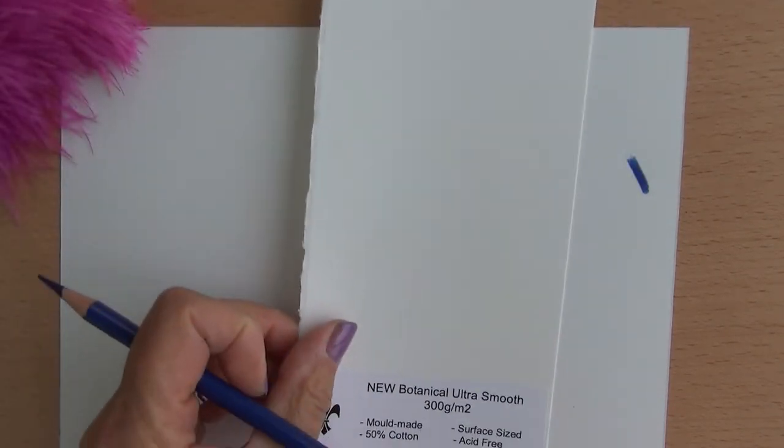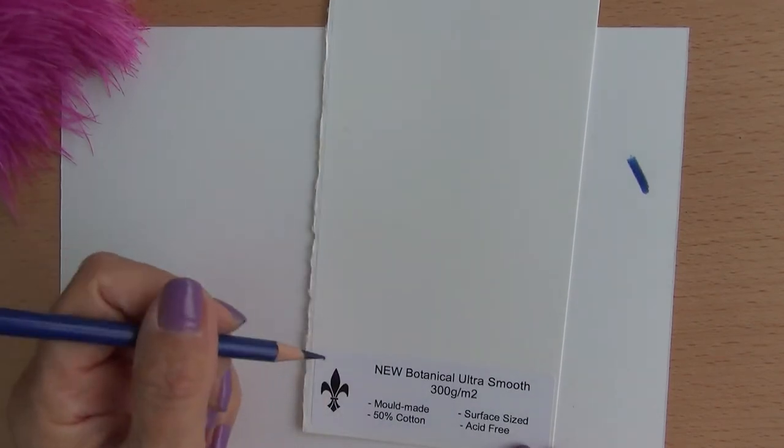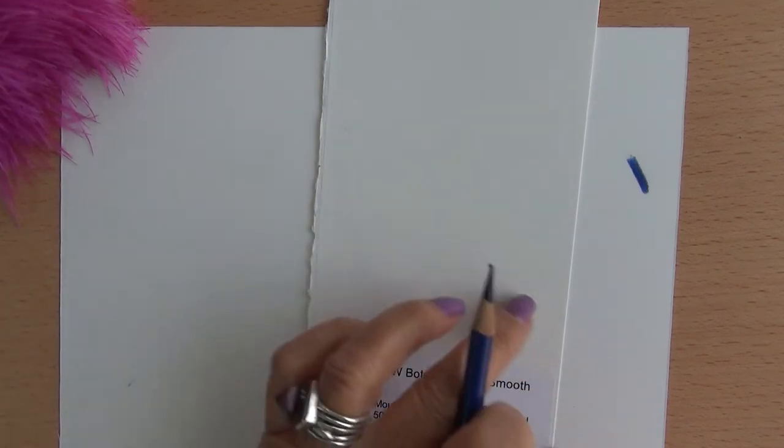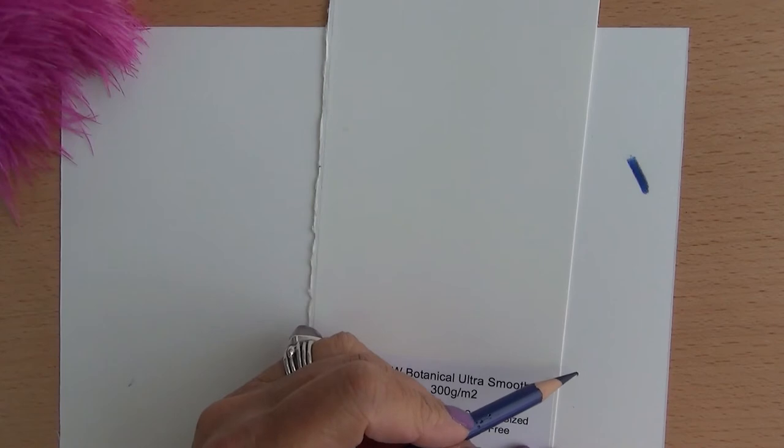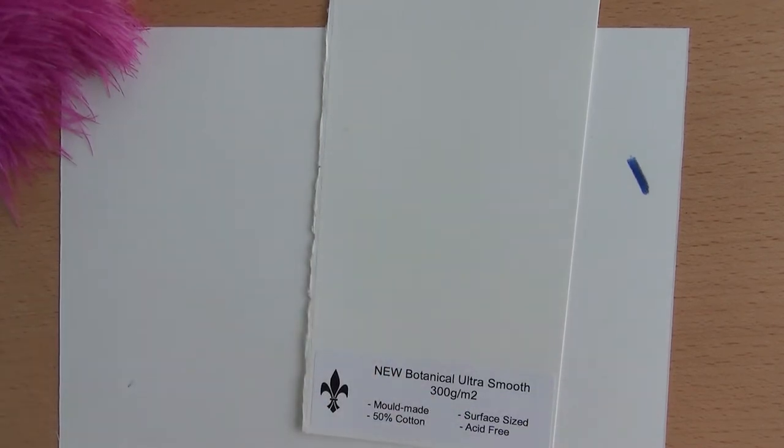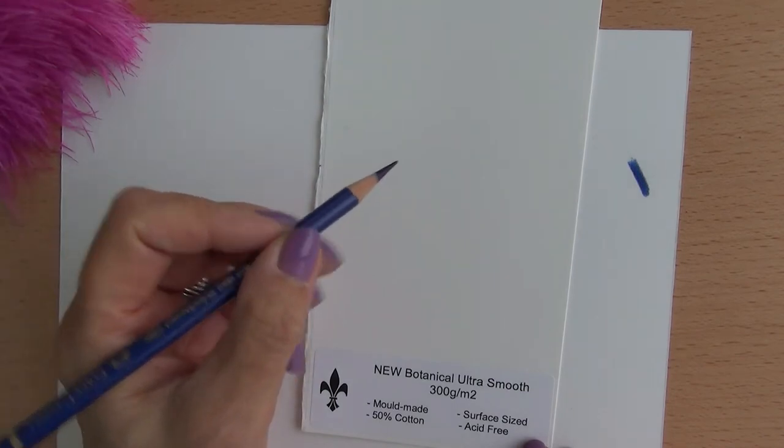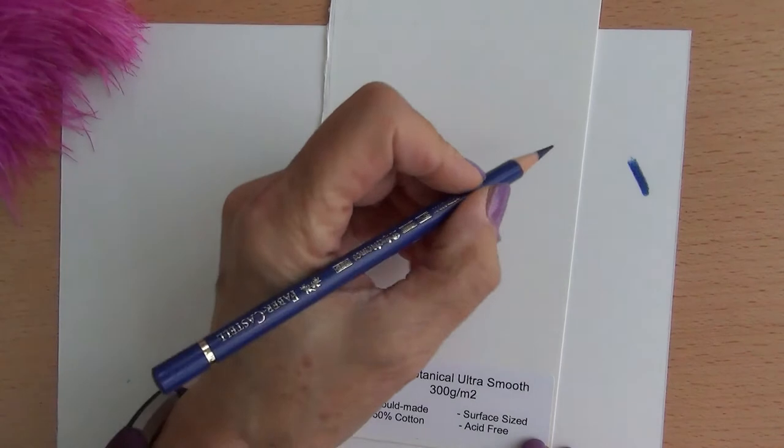Now this is a paper that's recently come onto the market, strangely named Botanical Ultra Smooth, meant to sort of emulate the Fabriano 5 Classico which is white hot pressed 300 grams so we've just tried this out that works very well.